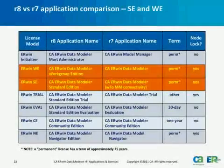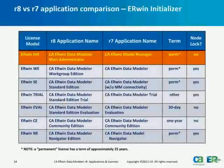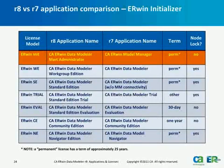CA Irwin Model Navigator is an exception. It requires its own separate license. Regardless of any other licenses that may be installed, an Irwin NE license is required in order to launch CA Irwin Data Model Navigator. Note this is a departure from R7.3 behavior. In Irwin R7.3, the standard Irwin Data Modeler license would allow CA Irwin Data Modeler to be launched as CA Irwin Model Navigator.